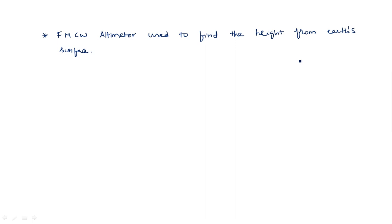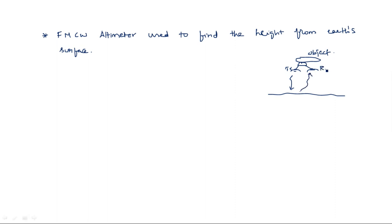Suppose an object like an aeroplane is incorporated with a radar system at its bottom, with two antennas — one transmitting antenna and one receiving antenna. The transmitting antenna transmits the signal onto the earth's surface, the earth reflects the signal towards the receiving antenna, and the receiving antenna collects this signal and sends it to the radar system. After this process we find the height or range.